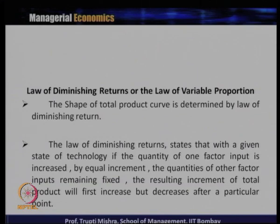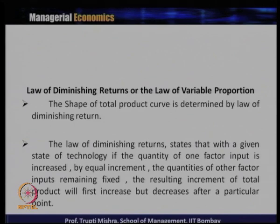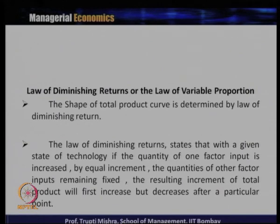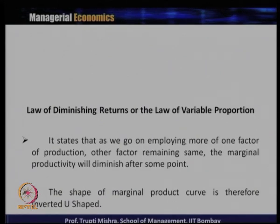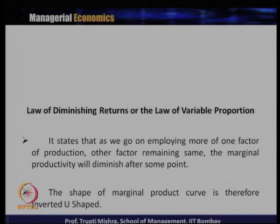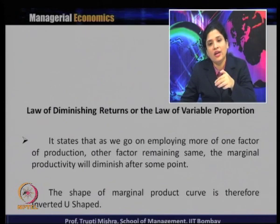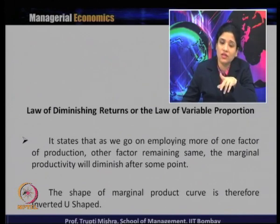In the short run, if capital is fixed and only labor changes, initially the total product will increase, but after a particular point, even with an increase in labor, total product will decrease. As we go on employing more of one factor of production with other factors remaining the same, the marginal productivity will diminish after some point. With capital fixed, if you keep increasing labor beyond a certain point, marginal productivity will diminish, which is why the shape of the marginal product curve is inverted.